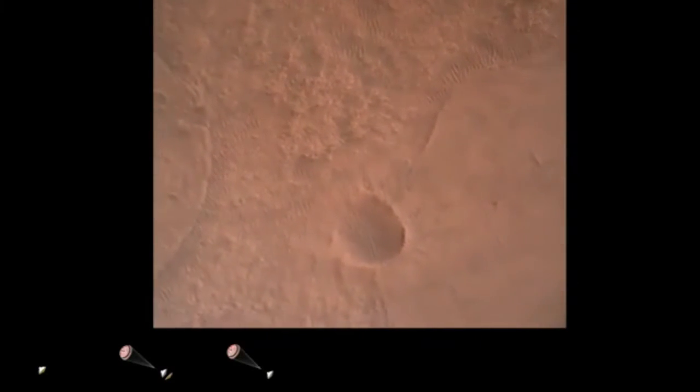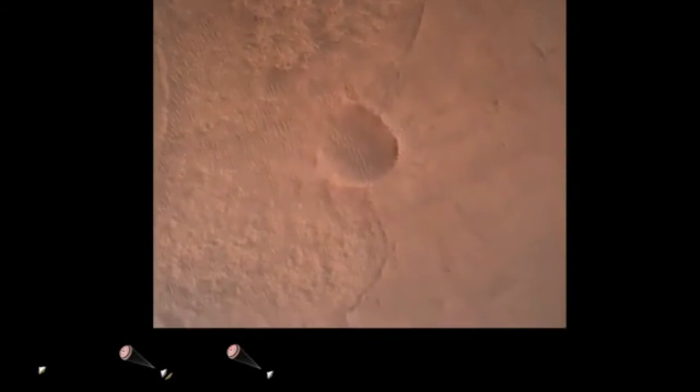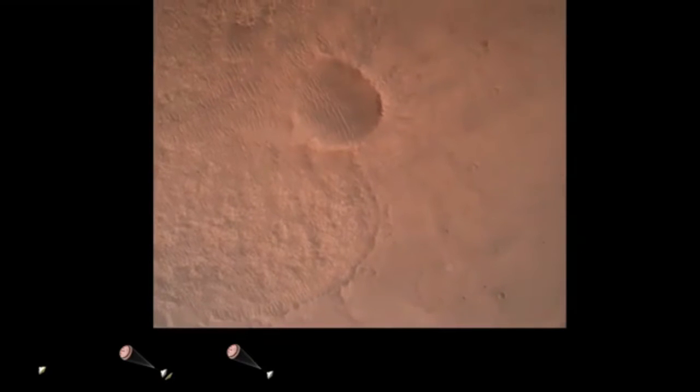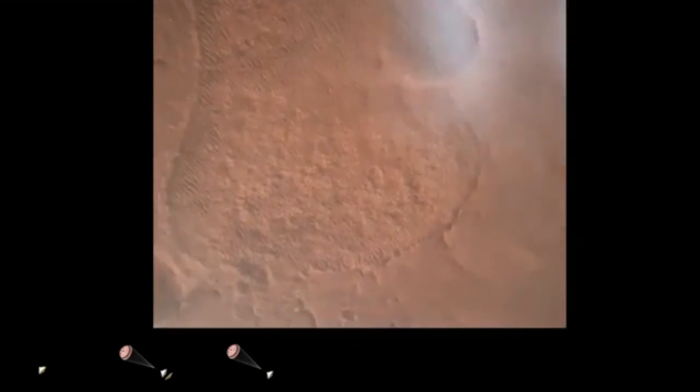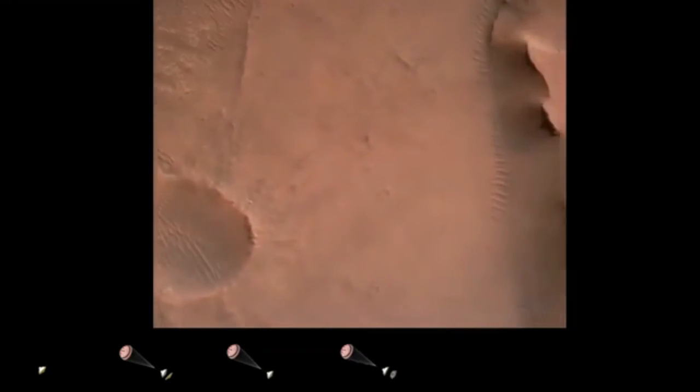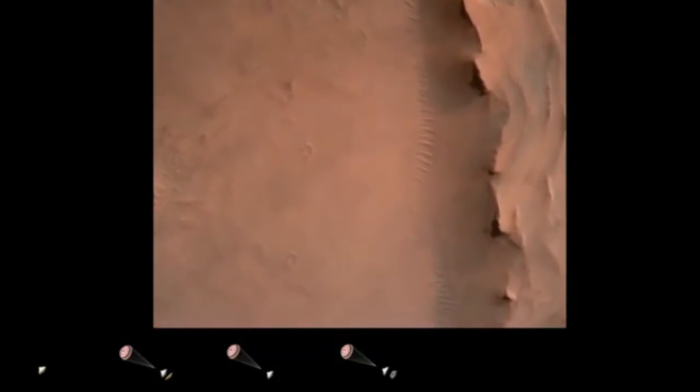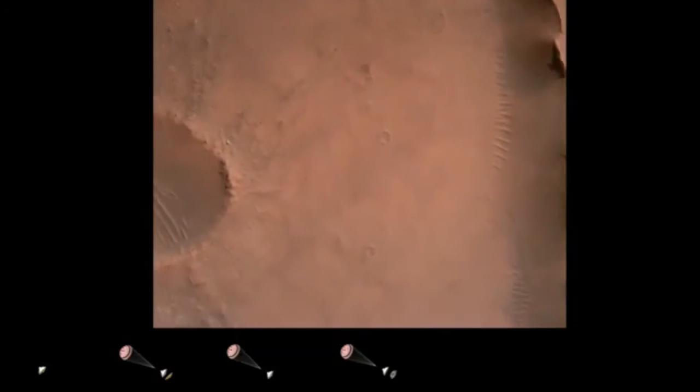Priming. PBA is nominal. We have priming of the landing engines. Back shell separated. Current velocity is 83 meters per second at about 2.6 kilometers from the surface of Mars. We have confirmation that the back shell has separated.